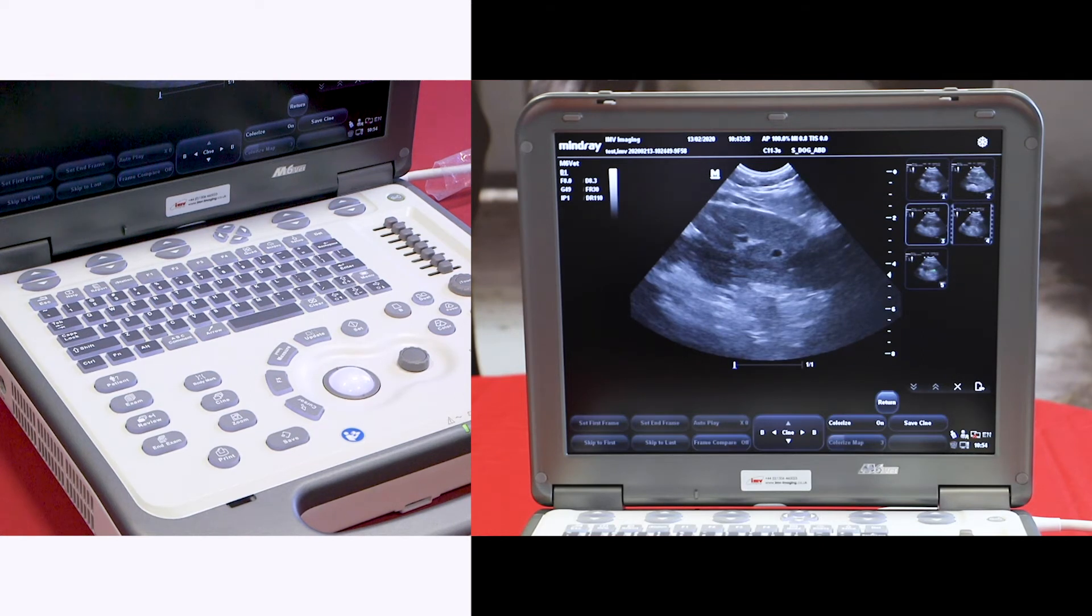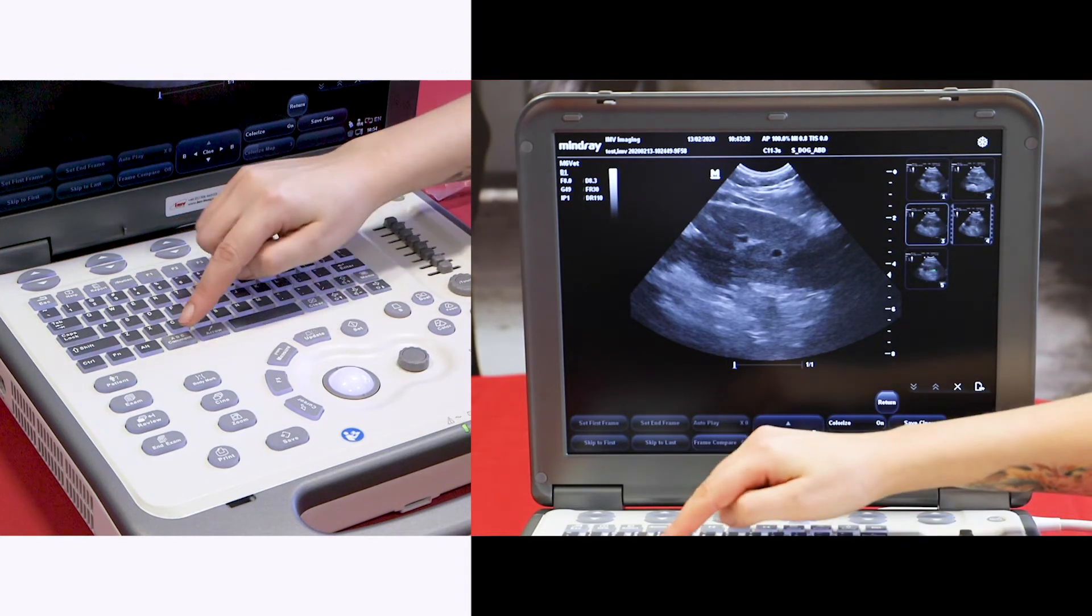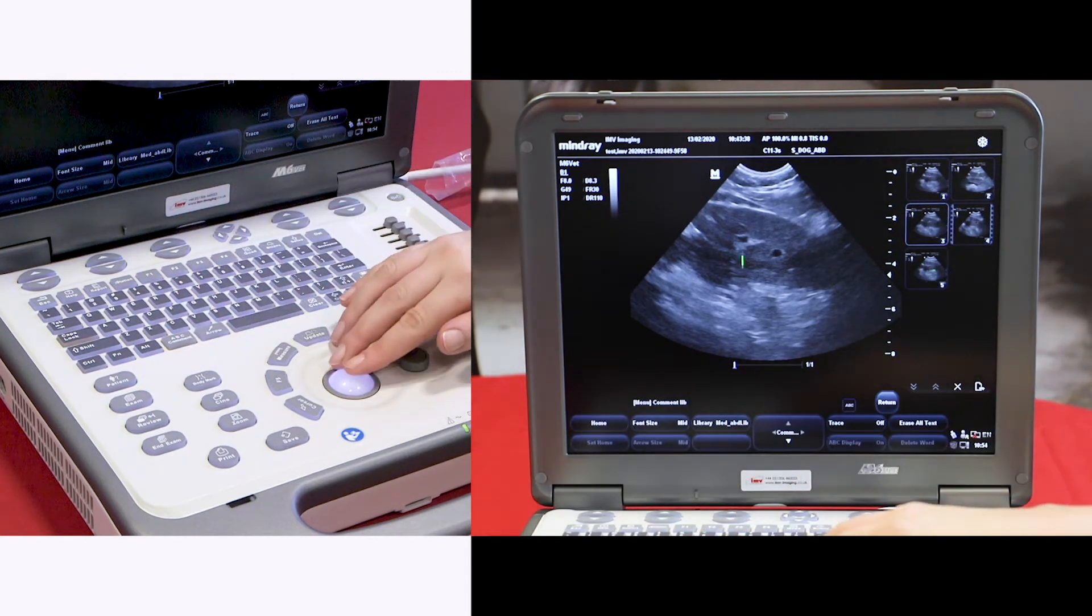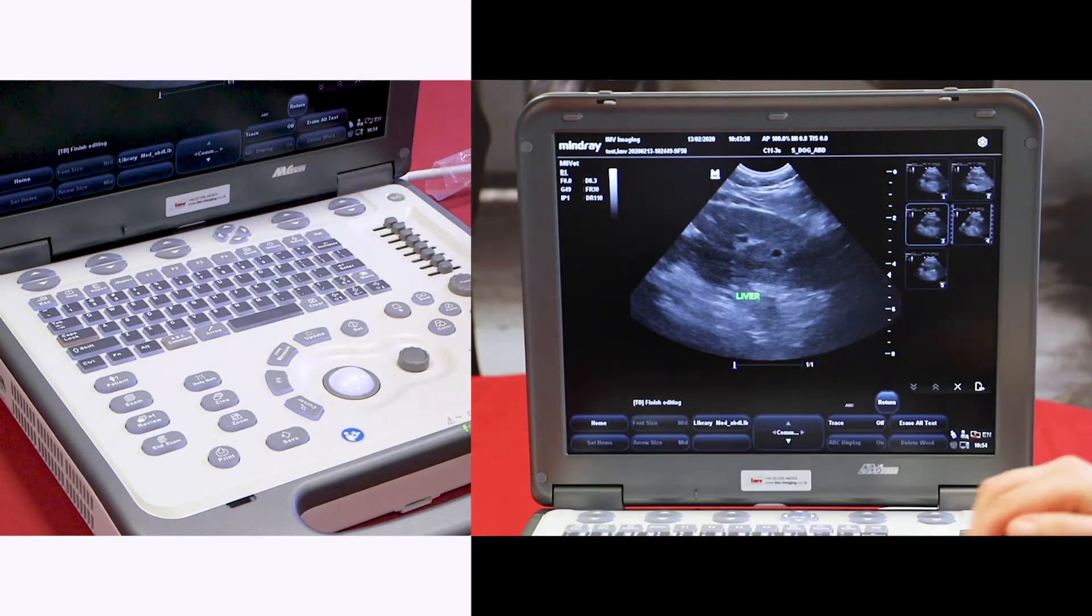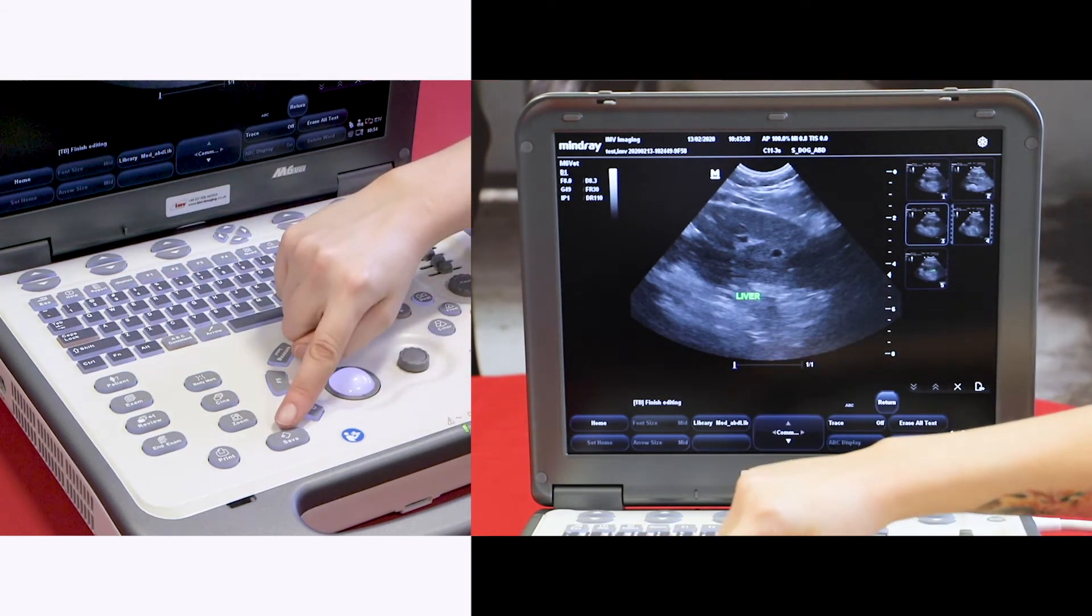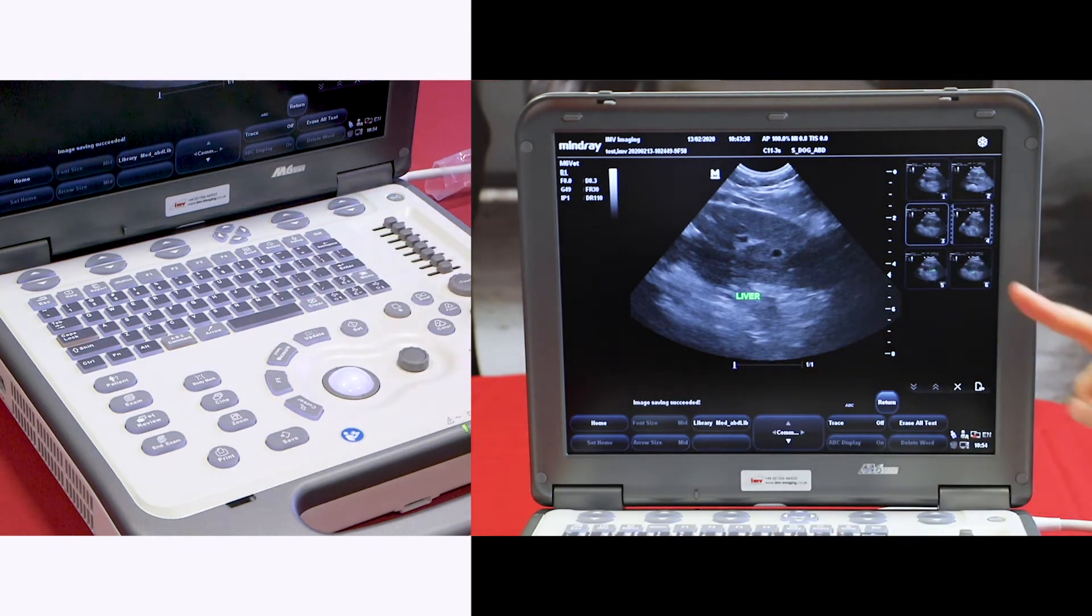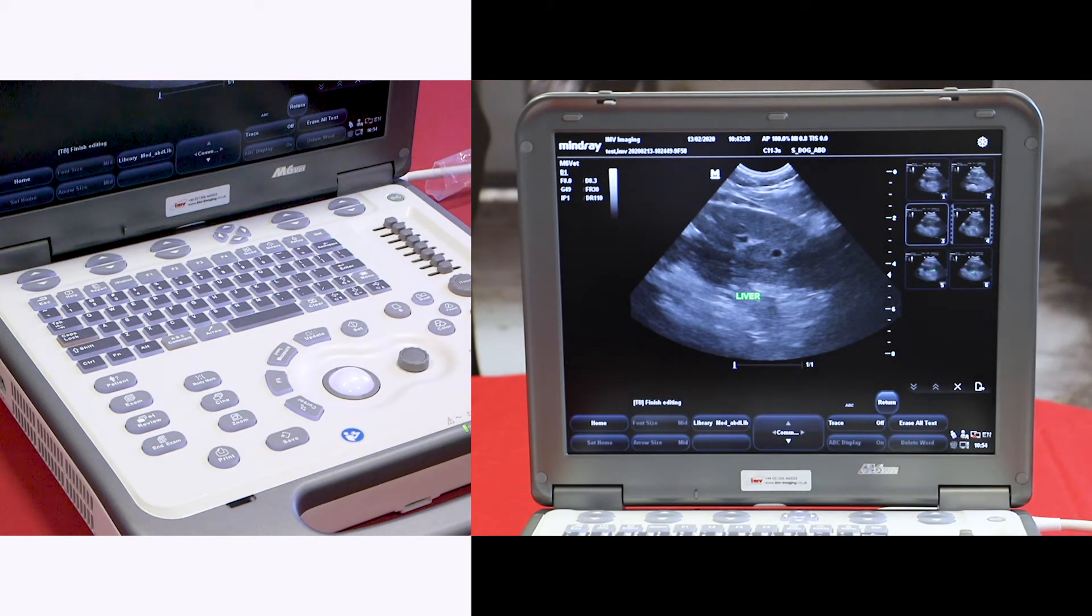If at this point you realize you want to make a measurement or add a comment, you still can. Press comment, add your annotation, and then save. It will save as an extra image, and the original is still saved.